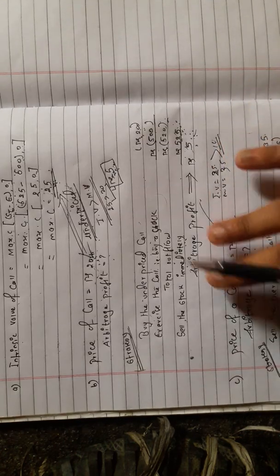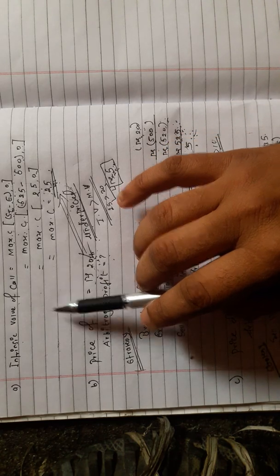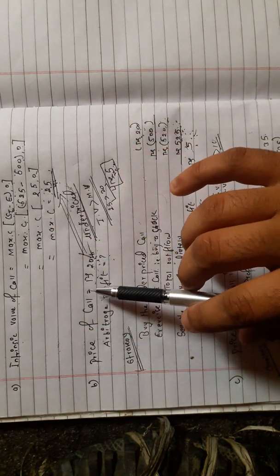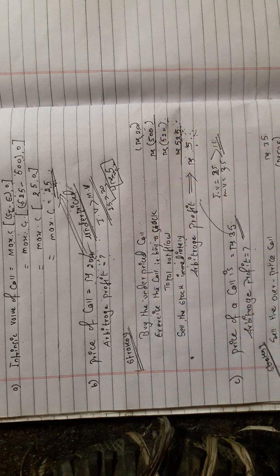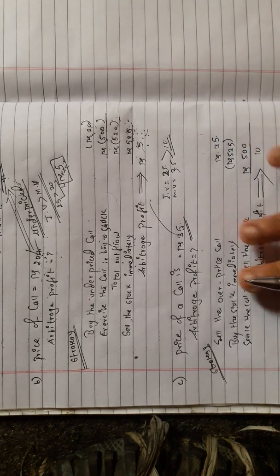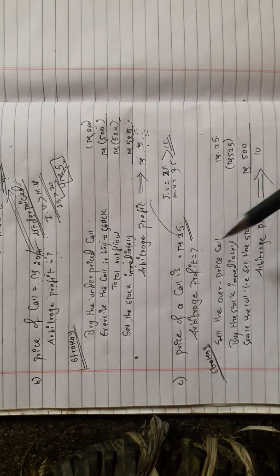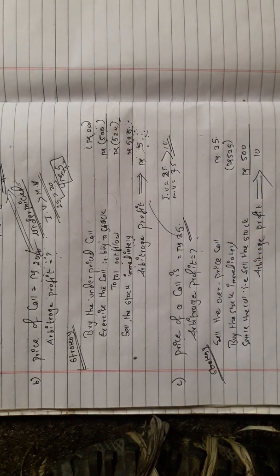This is the under-price condition: intrinsic value is greater than the market price of the call option. Now in scenario C, this is the over-price condition: the intrinsic value and market price of the call value is higher than the intrinsic value.